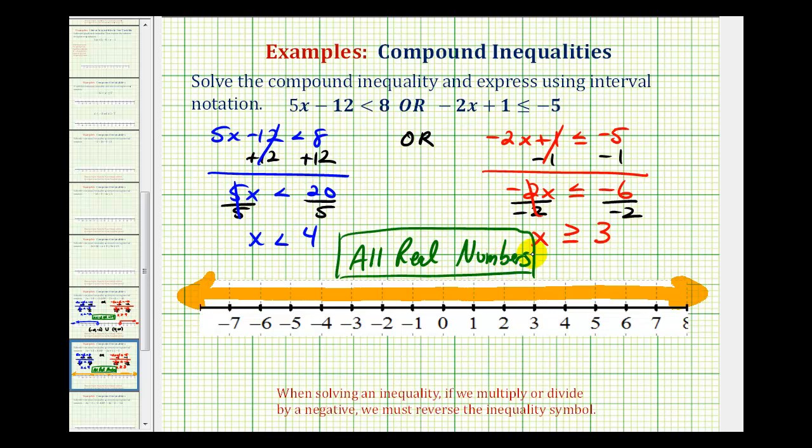And then for interval notation, to the right we're approaching positive infinity. And to the left we're approaching negative infinity. So interval notation for all real numbers would be from negative infinity to positive infinity.